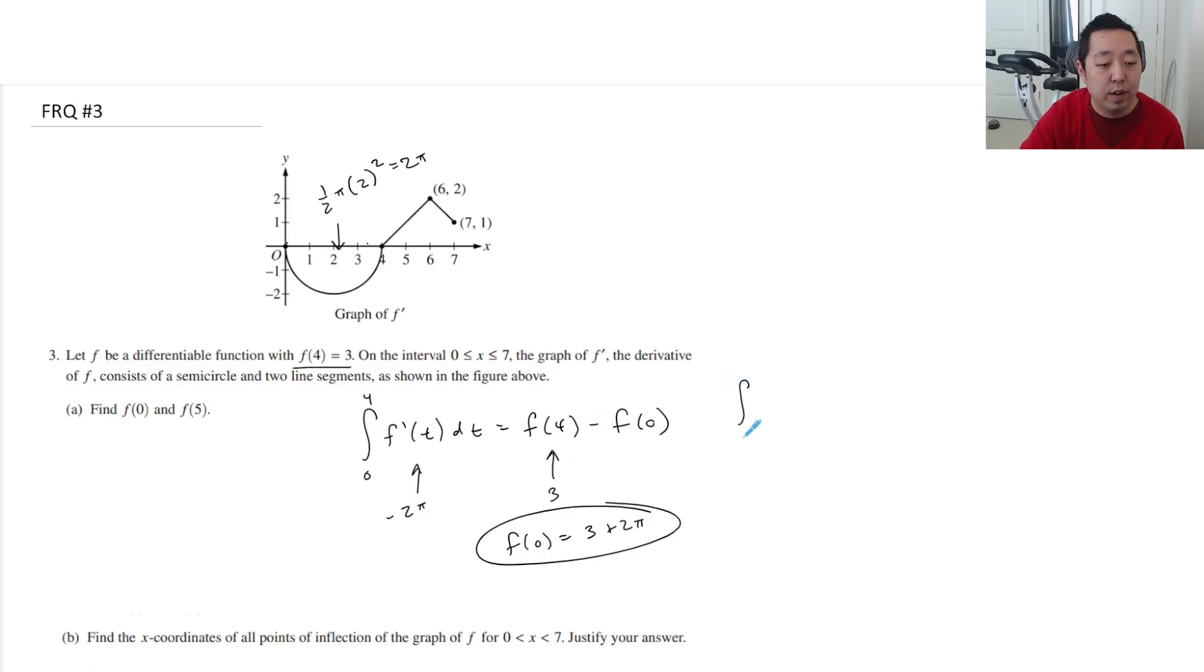So then I want to do the same thing for f of 5. I'm going to integrate from 4 to 5, f prime of t dt. That would just equal f of 5 minus f of 4 by fundamental theorem of calculus. f of 4 I know is 3. And this is the area from 4 to 5. That looks like 1 to me. Let's just confirm the slope.